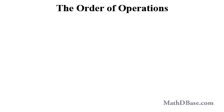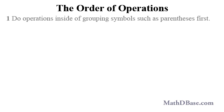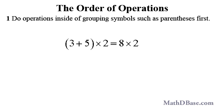There are five basic rules that mathematicians around the world have agreed to follow in evaluating expressions. 1. Do operations inside of grouping symbols such as parentheses first. Given this expression, we add the 3 and 5 first to get 8, and then we multiply by 2 to get 16.